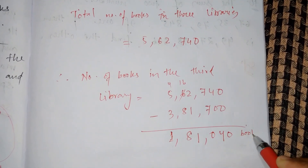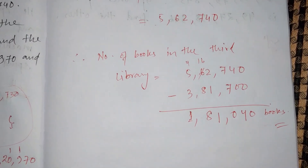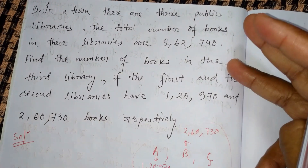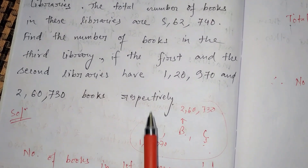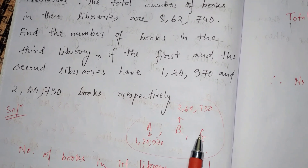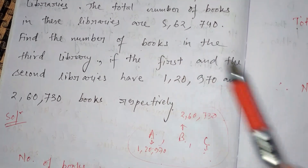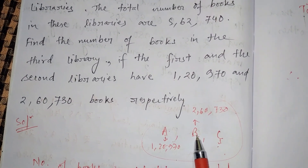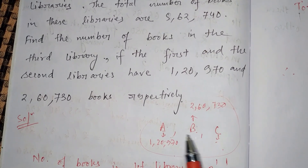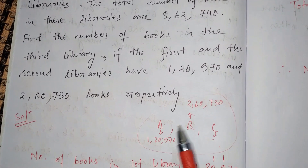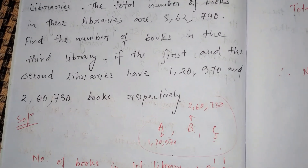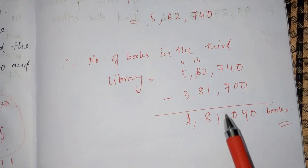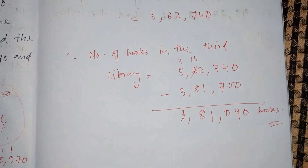To recap question nine: there are three libraries A, B, and C. We know the total number of books across all three, and we know the number of books in the first and second libraries, but not the third. So we add the first and second numbers, then subtract that sum from the total. By this method we find the number of books in the third library.